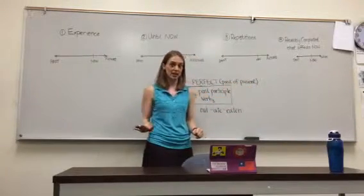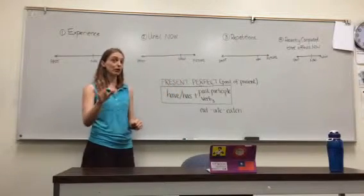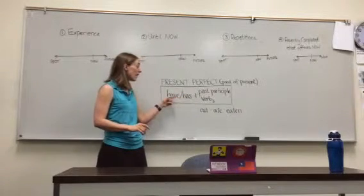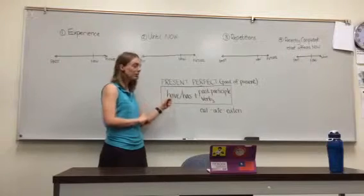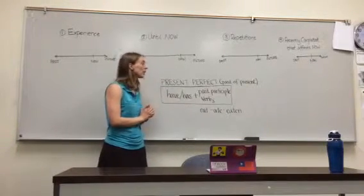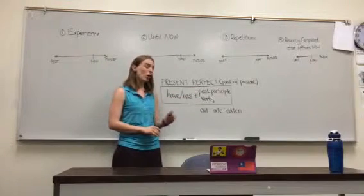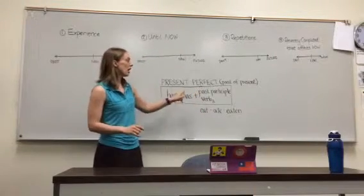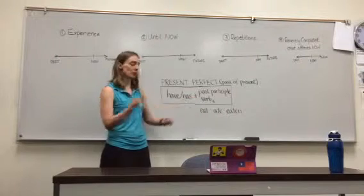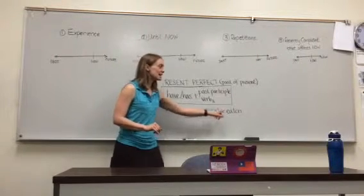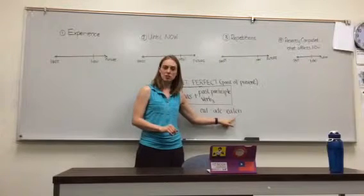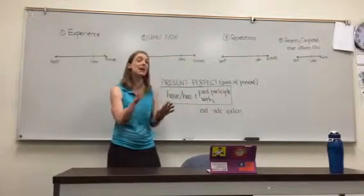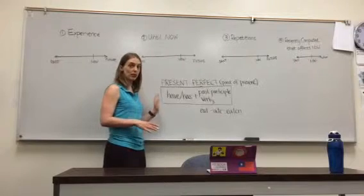We're going to start with present perfect, which is going to be the past of the present, which is now. So anything before now. We make this with has or have, depending on the subject. I, you, we, they have; he, she, it has. And then we're going to use the past participle or verb three. For example, eat, ate, eaten. This is the past participle, verb three.